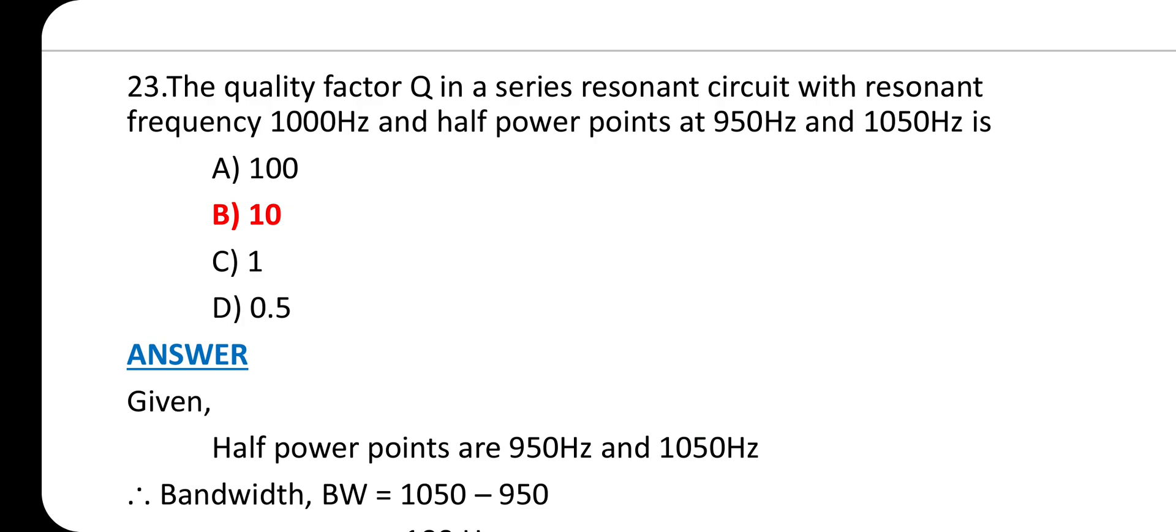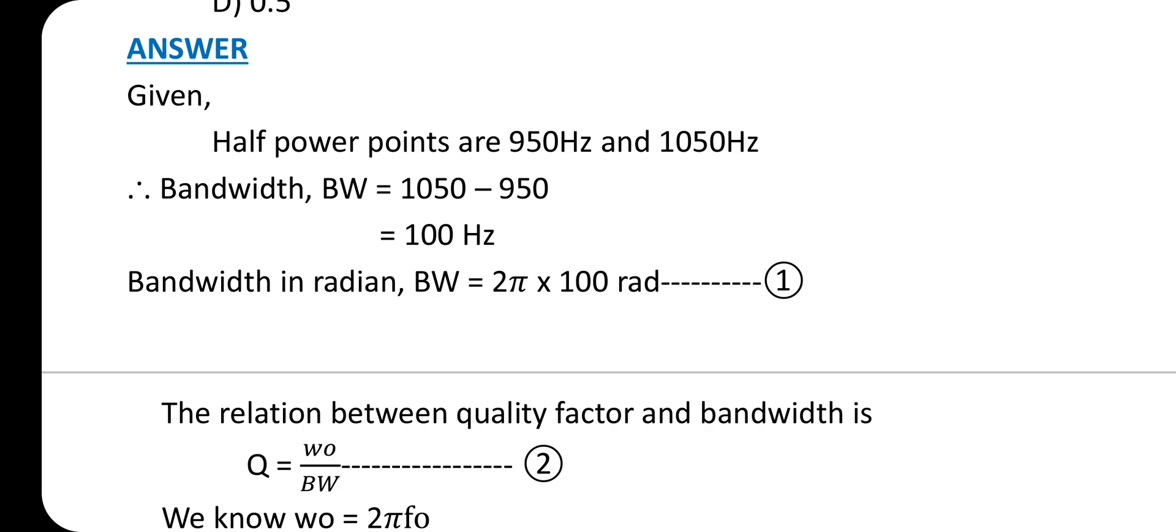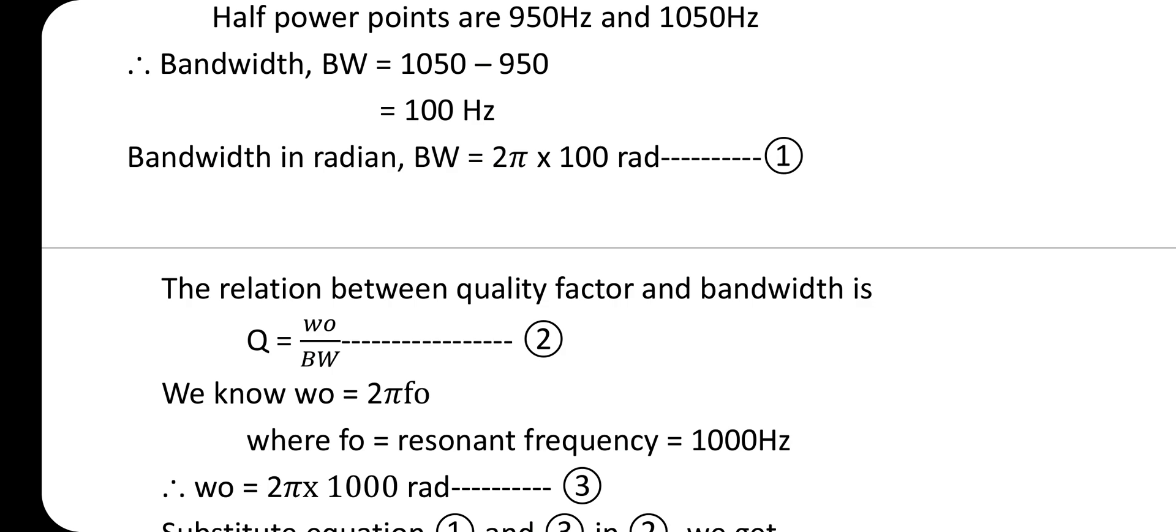Question 23: The quality factor Q in a series resonant circuit with resonant frequency 1000 Hz and half power points at 950 Hz and 1050 Hz is? Answer is option B: 10. Given half power points are 950 Hz and 1050 Hz, therefore bandwidth = 1050 - 950 = 100 Hz.